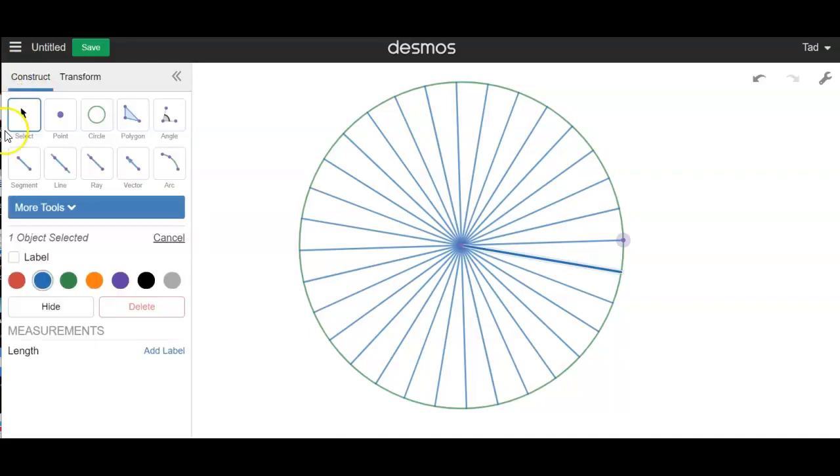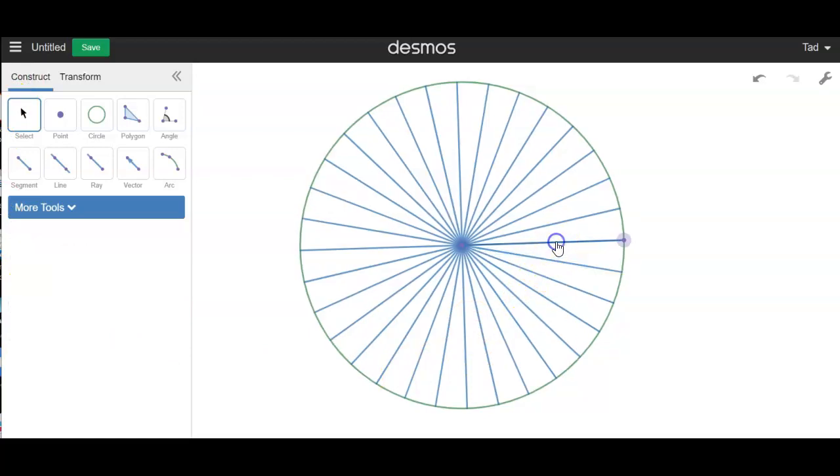Let's go back to construct. And I need to get the midpoint of this segment. So I'm going to go to more tools. Get the midpoint. There it is. And now I'm going to construct a circle from that midpoint out to that point that's on the circle, the outer circle.